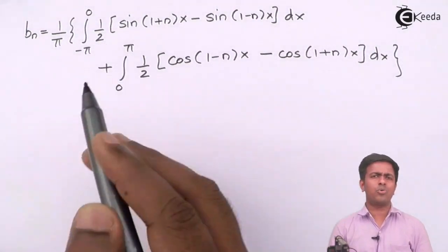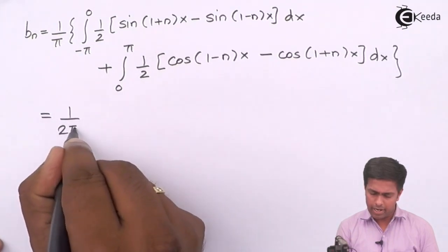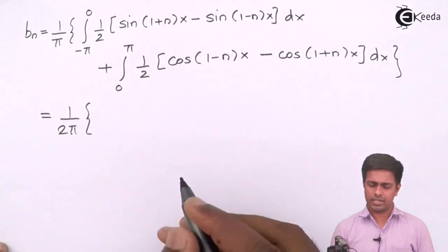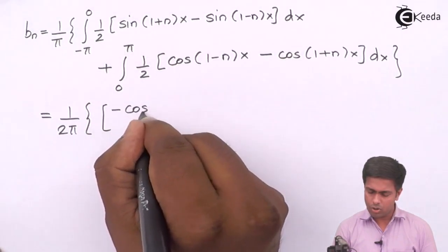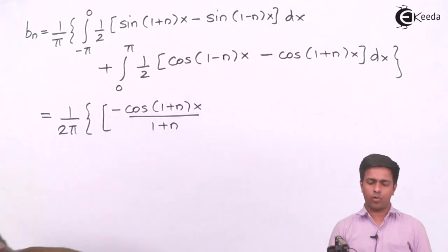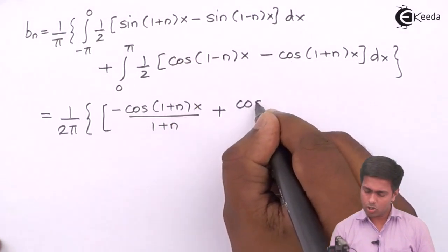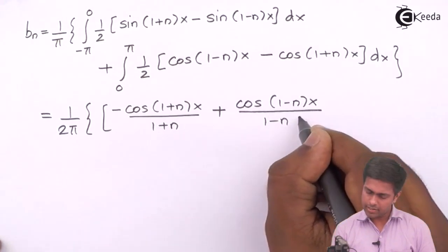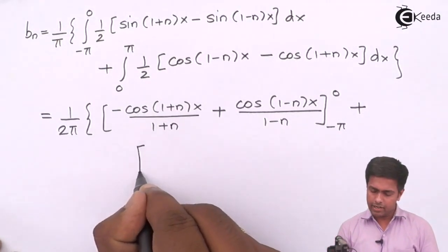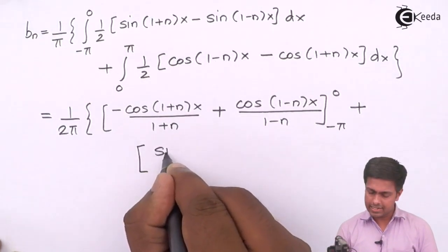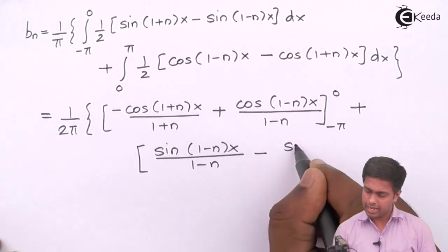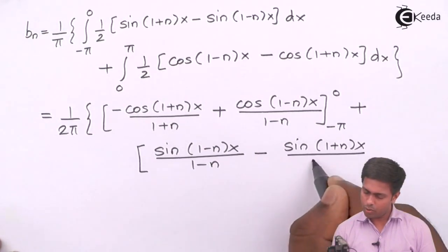Evaluating: ∫sin((1+n)x)dx = -cos((1+n)x)/(1+n), and ∫sin((1-n)x)dx gives +cos((1-n)x)/(1-n) after accounting for the negative sign. For the second integral: ∫cos((1-n)x)dx = sin((1-n)x)/(1-n), and ∫cos((1+n)x)dx = sin((1+n)x)/(1+n), evaluated with limits -π to 0 and 0 to π respectively.